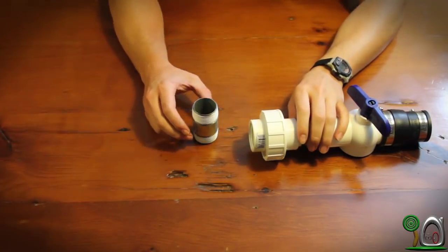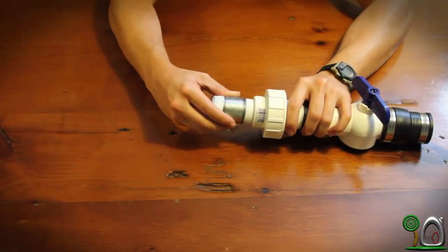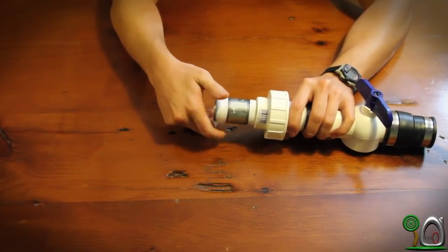Step 5. Take a 1.25 pipe nipple and screw that into the other end of your 1.25 union.